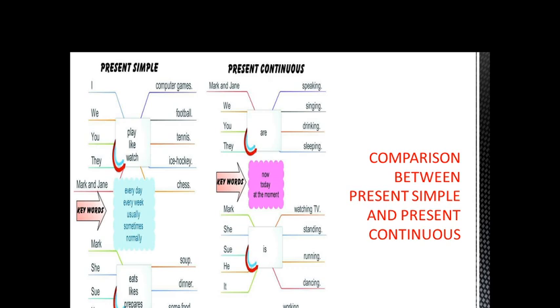For that, there are some keywords. What is the keyword that we use in the sentence of simple present tense? For example, every day, every week, usually, sometimes, normally, daily, etc. For example, I play computer games every week. Number two, he usually likes soup.